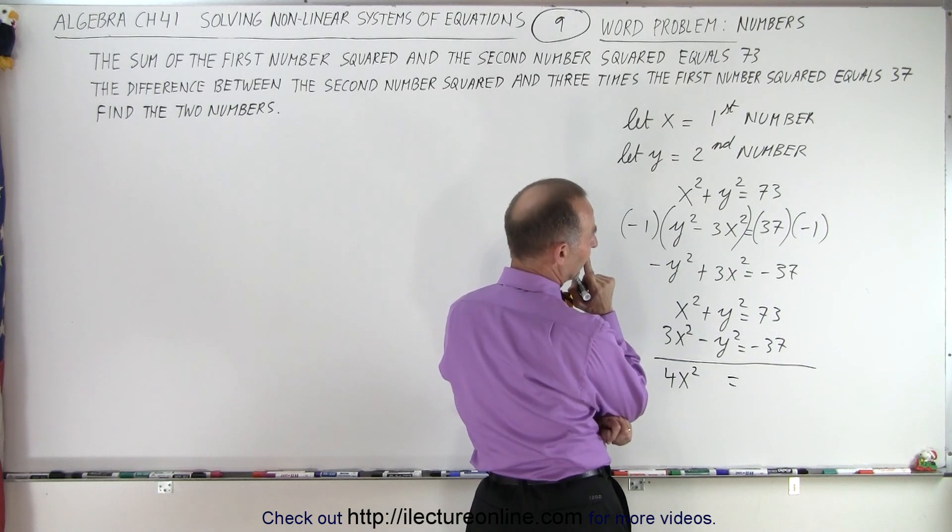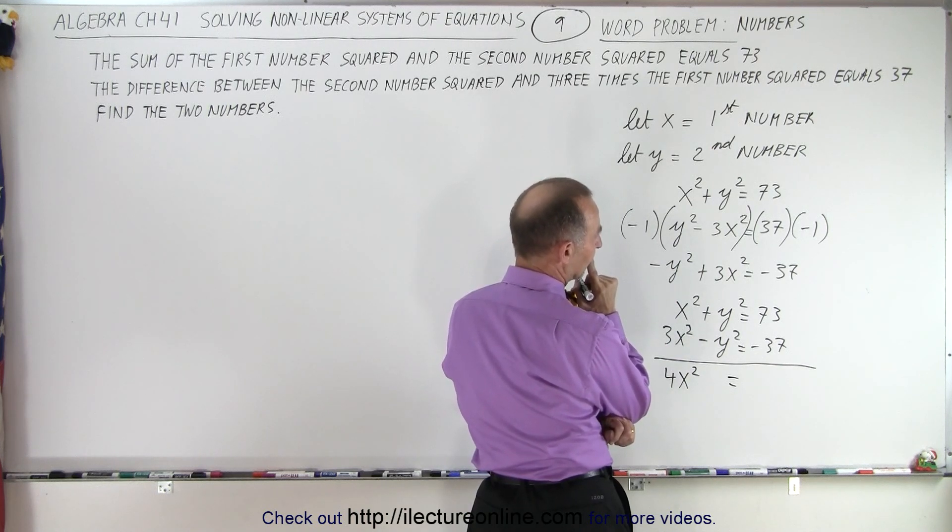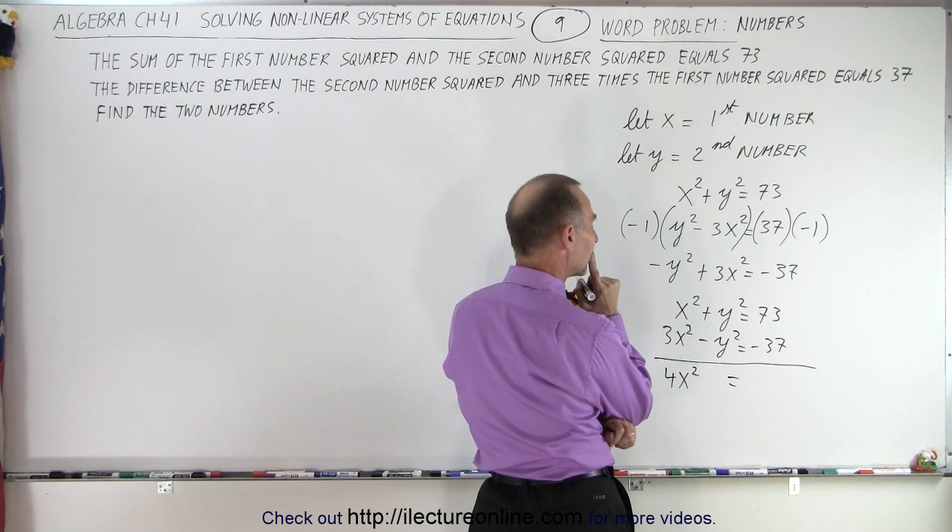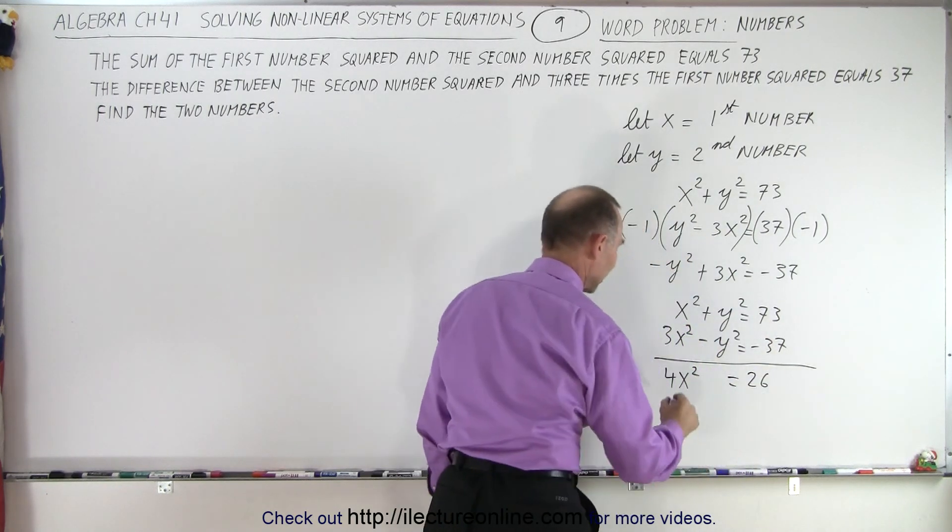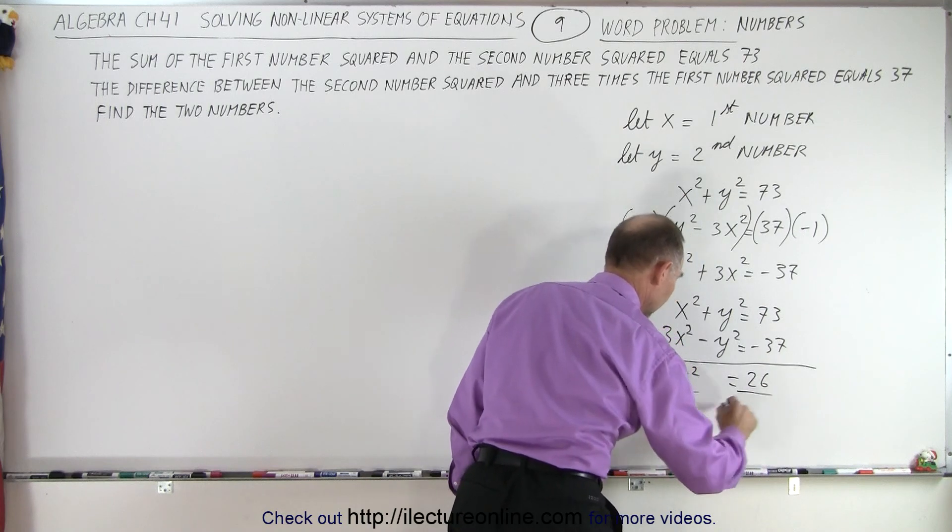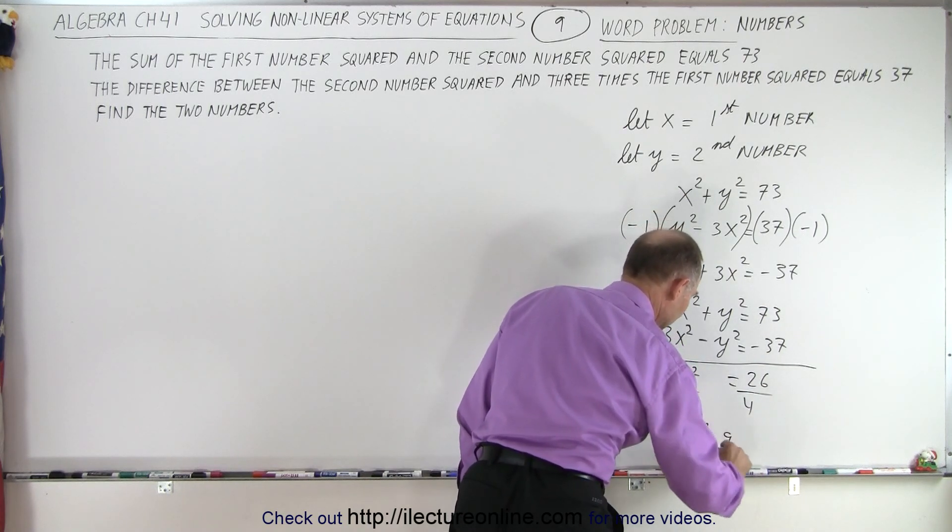That equals 36. Divide both sides by 4. We get x squared is equal to 9.